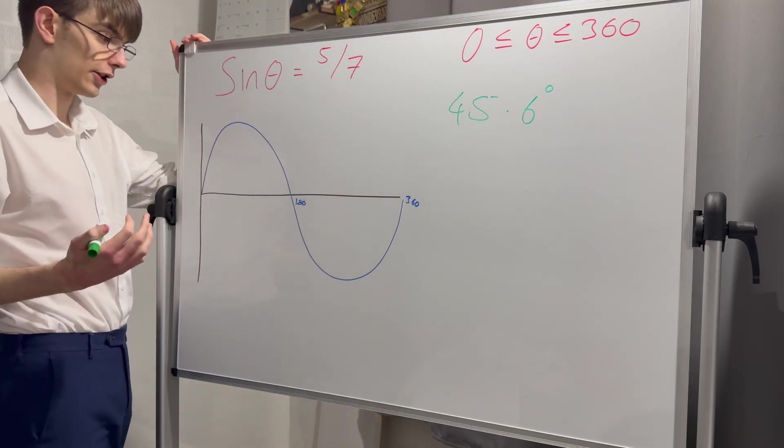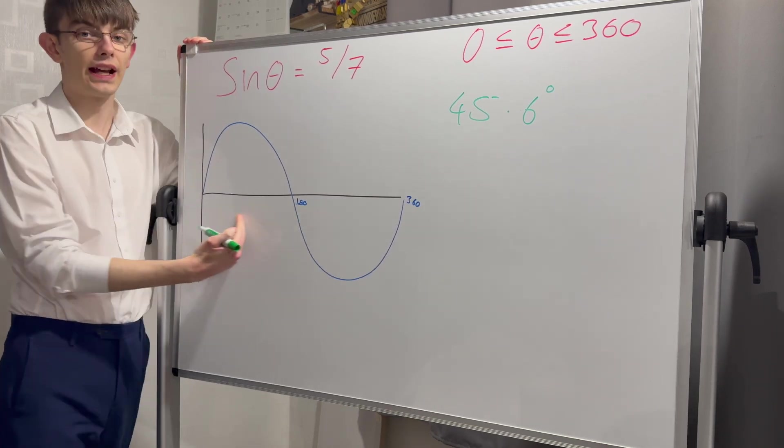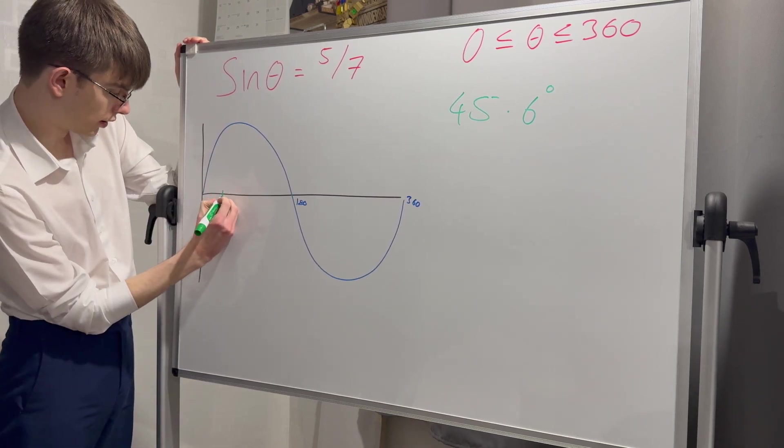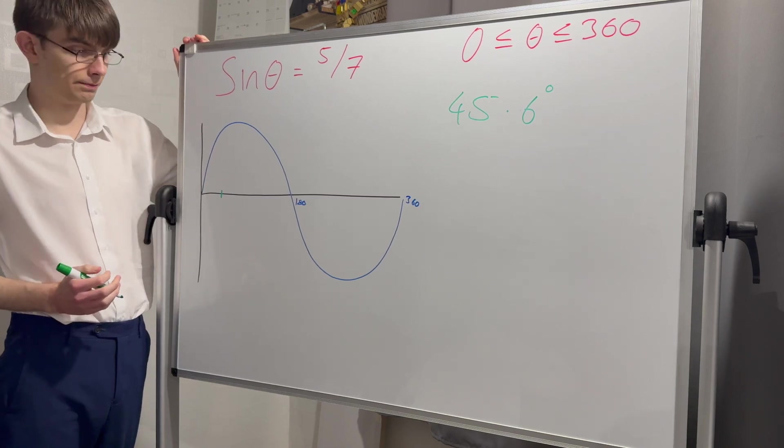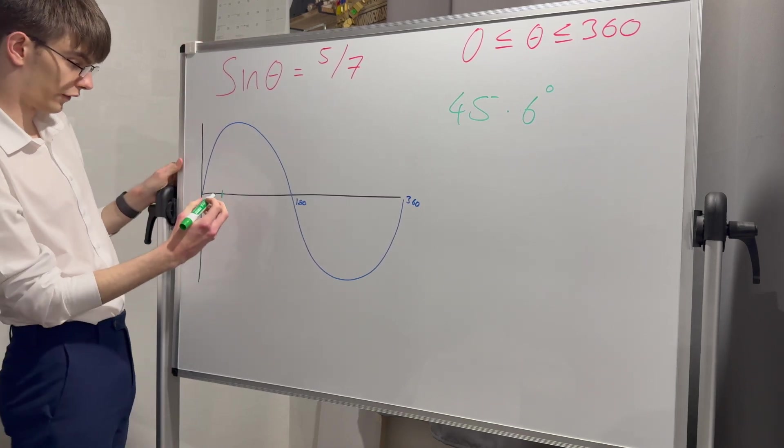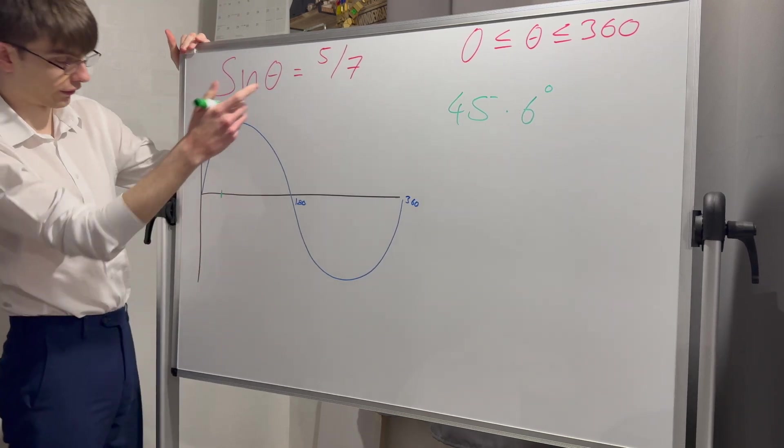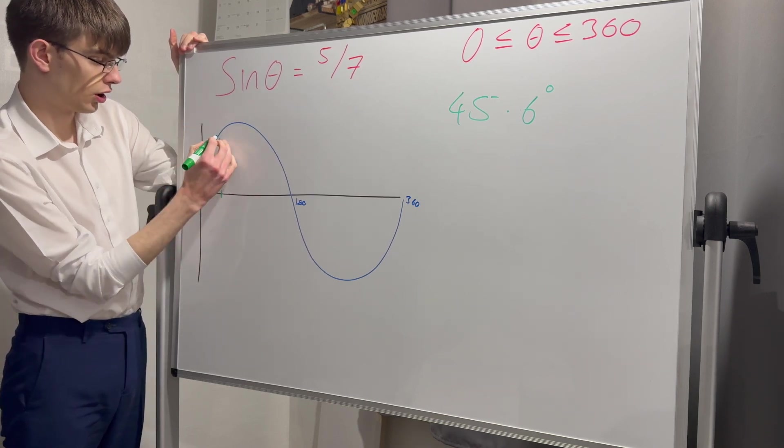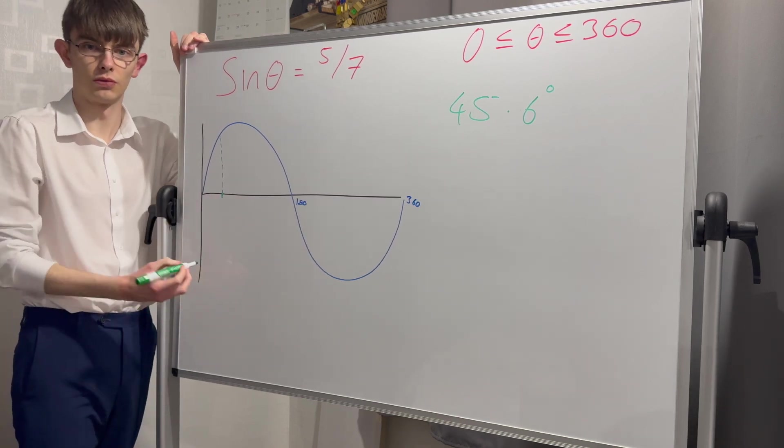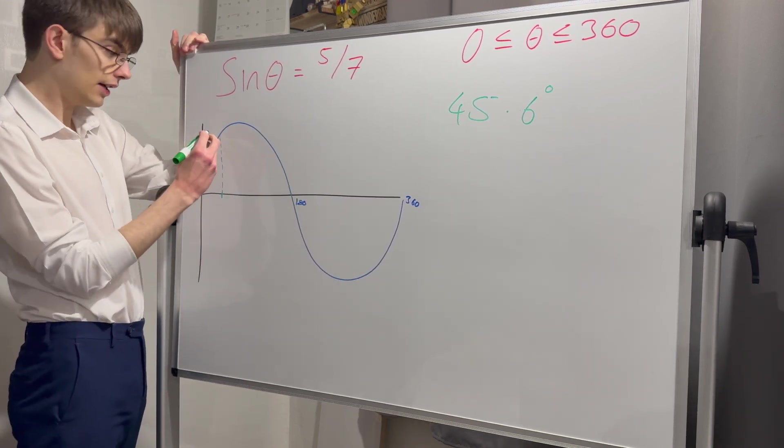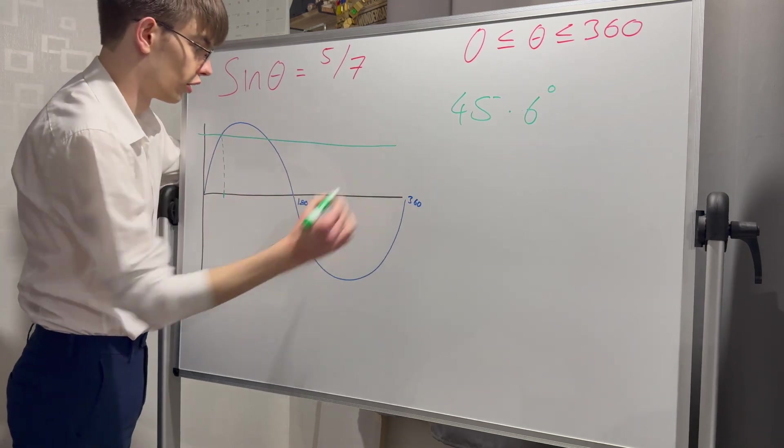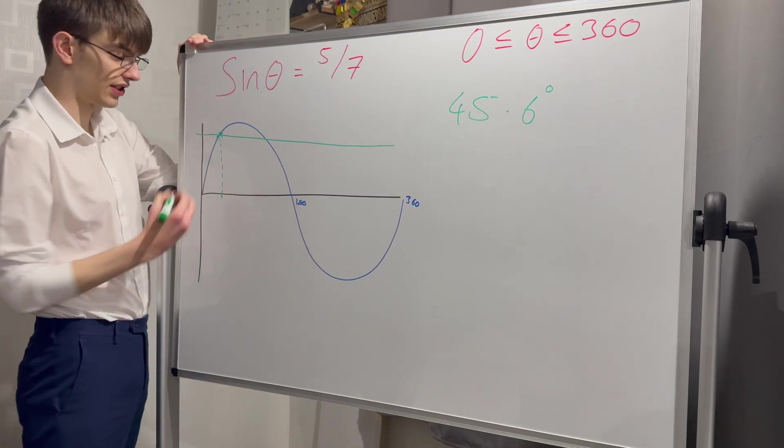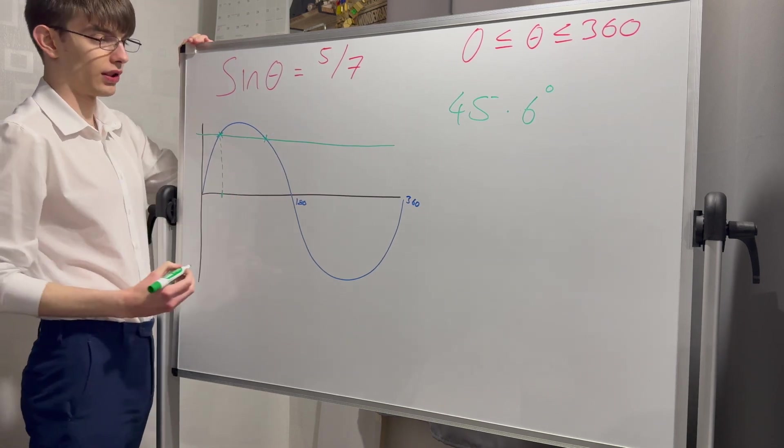As soon as I've got my principal value, I'm going to find it on my x-axis and plot it in. I know that my peak is going to be at 90, so 45.6 is about here. I'm going to draw a straight line up to my sine graph, then draw a horizontal line across my entire graph. Where does it intersect? It intersects once there, and once here.